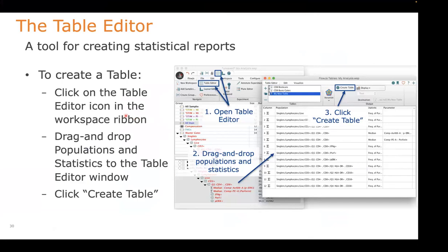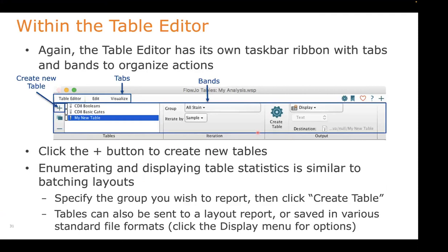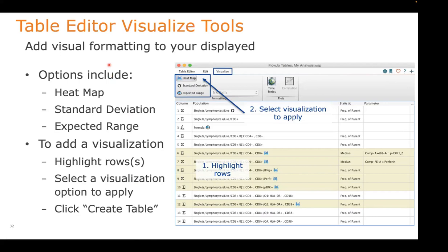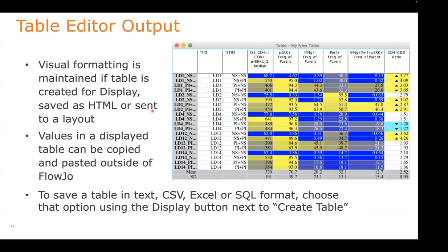Looking at the table editor — we select populations and, like most things in FlowJo, drag and drop to add information to the table editor. Just like the layout or the workspace, things are grouped by tabs and bands. We took a look at tools to heat-map statistics we've added. There are additional ones like standard deviation or expected ranges that you can set in preferences. To turn those on, go to the visualize tab, select the rows in the table, and toggle on that option — generating the table with those columns heat-mapped.